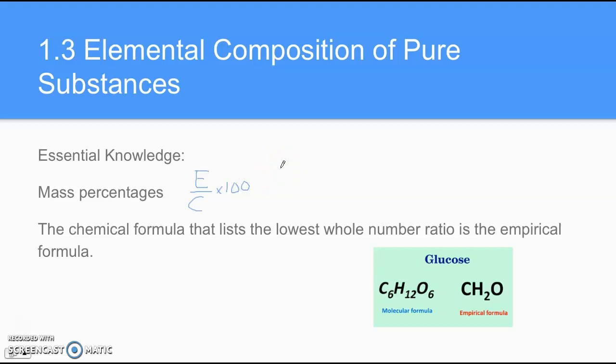And then we have empirical formulas. That's the last part of this section. An empirical formula is the lowest whole number ratio of the elements in a compound. So for example, there's glucose right here. The molecular formula is C6H12O6. Well, all these subscripts are divisible by 6, so it reduces down to CH2O. And this is considered the empirical formula, the lowest whole number ratio of the elements in the compound.